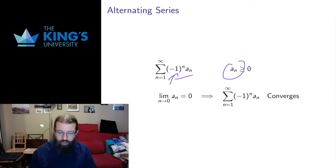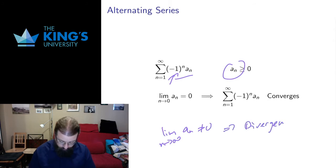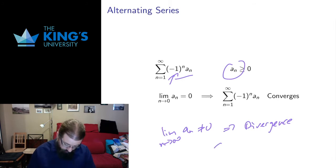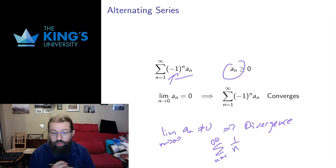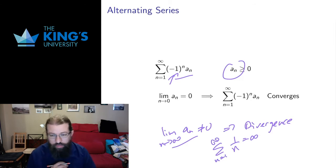You might remember in the test for divergence: if the limit as n goes to infinity of a_n is not equal to zero, we have divergence. The contrapositive of that is not true in general. If the limit of the term is equal to zero, we don't know whether or not the series converges. The harmonic series 1/n was the classic example — the terms go to zero but the series still diverges. So for general series we can only use the limit of the terms as a test for divergence, not convergence.